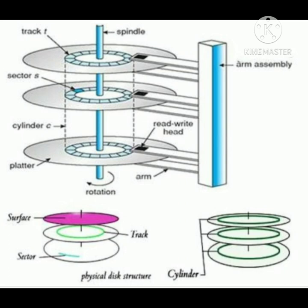Each disk rotates at around 7200 rotations per minute. The modern hard disk normally holds 260 GB of data, or 1024 GB of memory space — 1024 GB equals 1 terabyte. So the modern disk normally holds up to 1 terabyte of data.